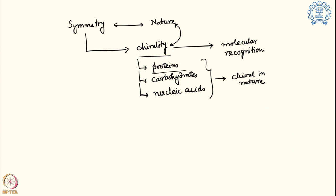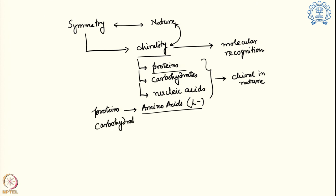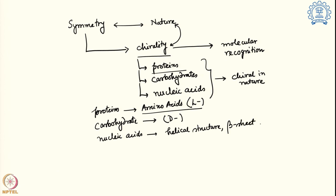For example, proteins are made out of amino acids, which are the building blocks, and these are mostly L amino acids in nature. Carbohydrates, on the other hand, are D-carbohydrates in nature. These D and L designations are talking about their absolute configuration in three-dimensional space. Nucleic acids themselves are not chiral, but when they form helical structures or other secondary structures like beta sheets, those secondary structures are all chiral in nature.